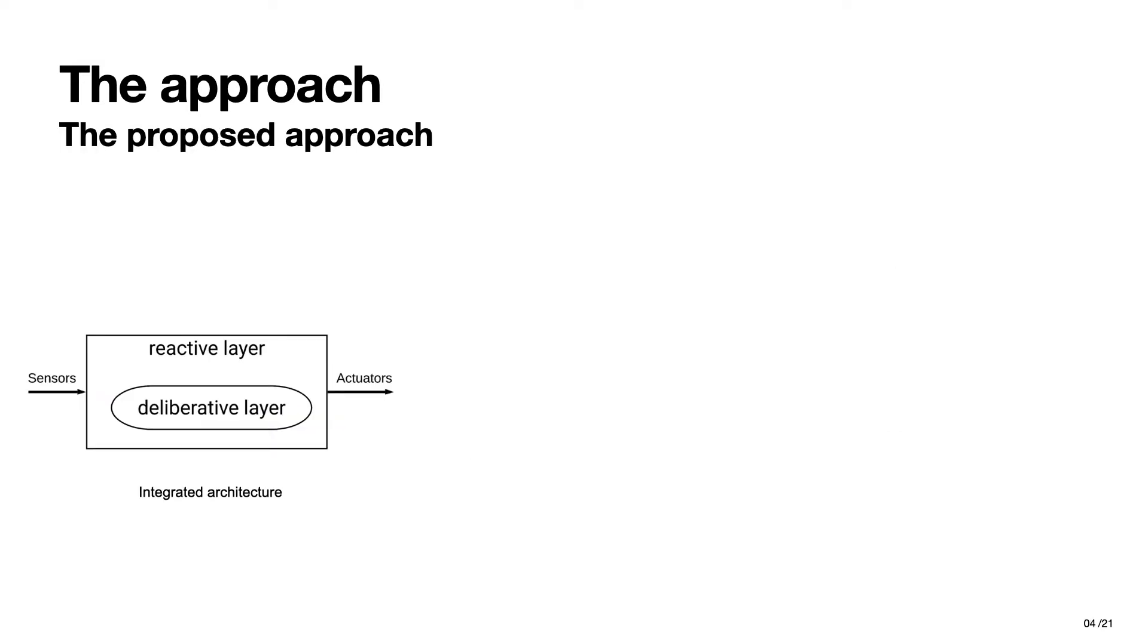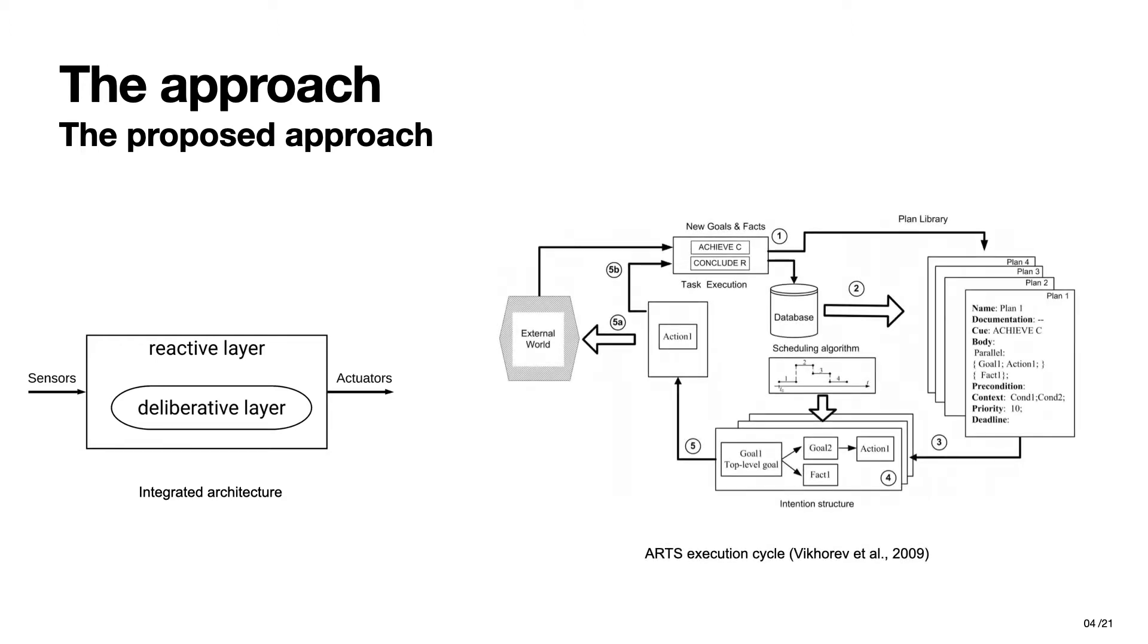Our approach, instead, involves the introduction of real-time concepts directly into the cognitive layer of the agent. Combining real-time and agent-based systems allows us to obtain a system that is able to make correct choices in the time required, not only in situations that it knows, but also in complex situations where problems require a reasoning process to be solved.